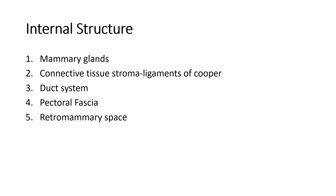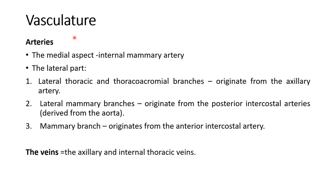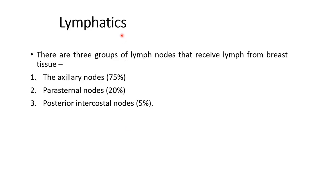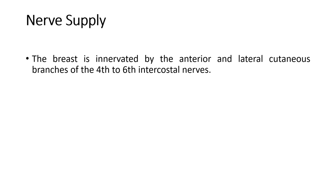The descriptions are available in the video. Next, write about the vasculature, including arteries and veins. The artery supplying the medial aspect of breast is the internal mammary artery. The lateral part is supplied by 4 arteries: lateral thoracic and thoracoacromial branches of axillary artery, lateral mammary branches of posterior intercostal artery, and mammary branches of anterior intercostal artery. The veins are axillary and internal thoracic veins. Next, mention the lymphatics — axillary nodes, parasternal nodes, and posterior intercostal nodes. The breast is innervated by anterior and lateral cutaneous branches of the 2nd to 6th intercostal nerves.